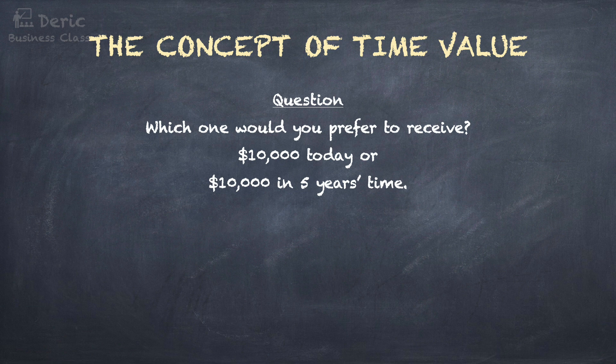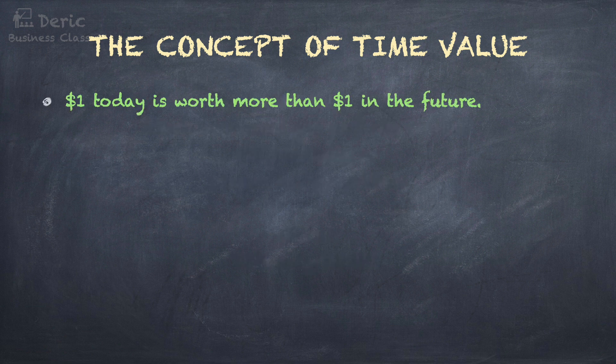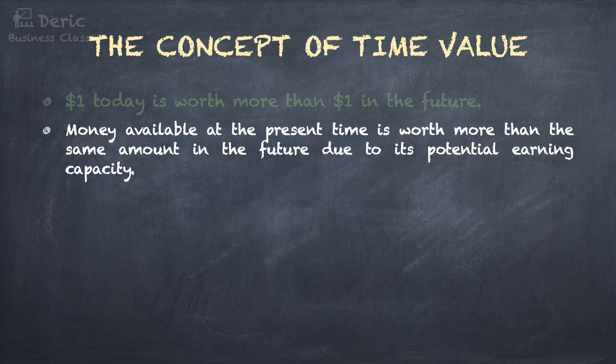Which one would you prefer to receive: $10,000 today or $10,000 in 5 years time? I believe your answer is definitely today. Why do we want to receive the money now, but not after 5 years? The reason is because $1 today is worth more than $1 in the future. As a basic principle of time value, money available at the present time is worth more than the same amount in the future, due to its potential earning capacity. So after receiving $10,000 today, we may use this money to invest and earn a return from it.